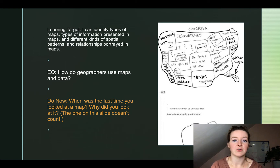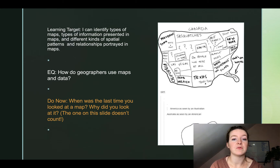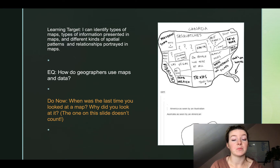Your essential question, which you do not need to answer but should write down, is: how do geographers use maps and data? And then your do now, which you need to write down and take a moment to answer — so pause when you finish writing it down — is: when was the last time you looked at a map, and why did you look at it?